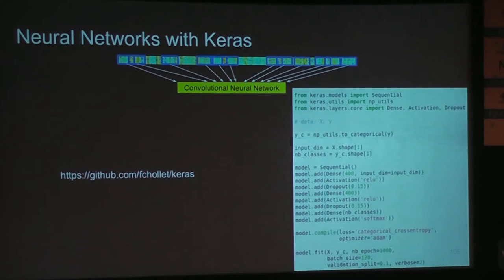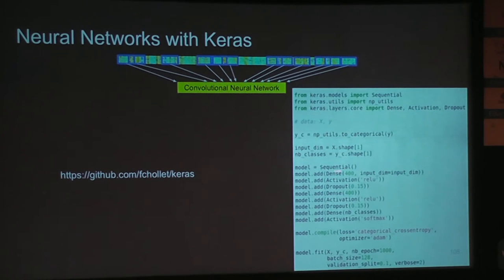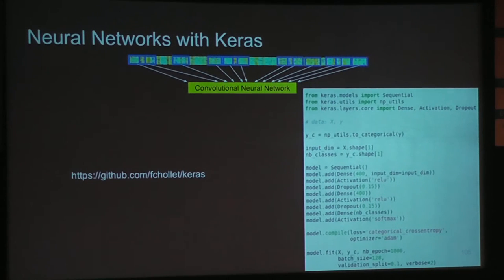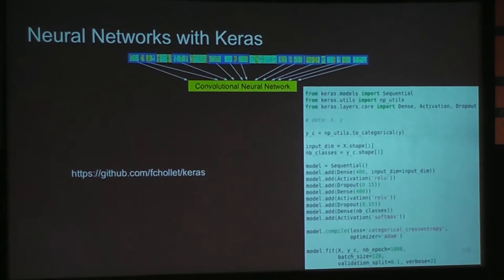Implementing neural networks with Keras is very simple. You define a sequential model, keep adding dense layers and dropouts, define the number of classes, use categorical cross entropy — which is multi-class log loss — and an optimizer. Then you just fit the model: X is your data, Y is your labels, and you specify number of epochs. That's it. Similarly, you can design a convolutional neural net by adding convolutional layers instead of dense layers, adding as many as you want, and then flatten and apply softmax or sigmoid depending on your task.